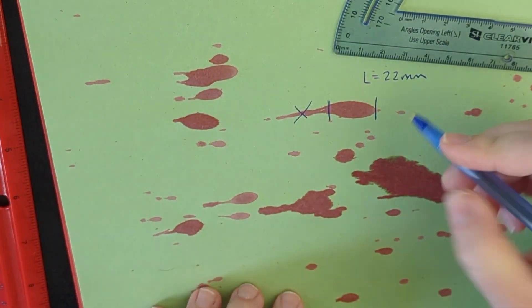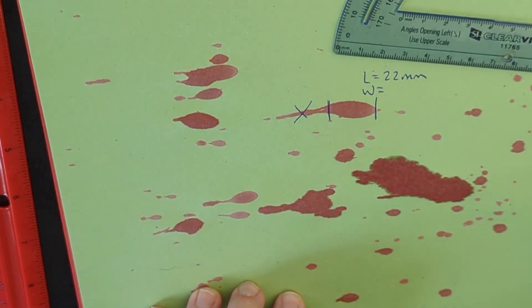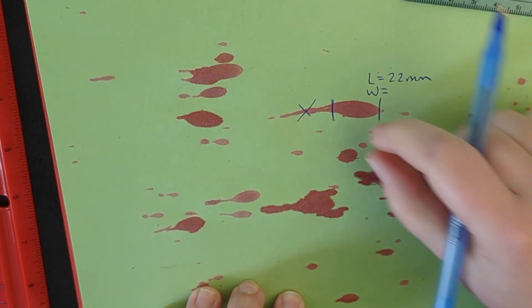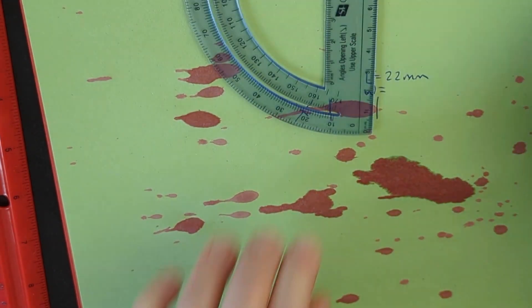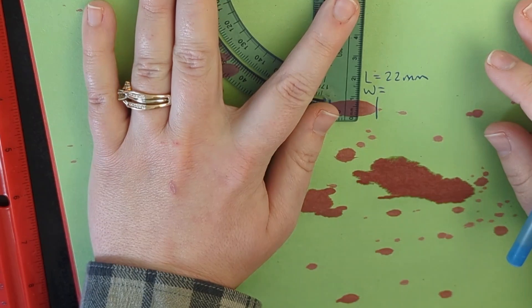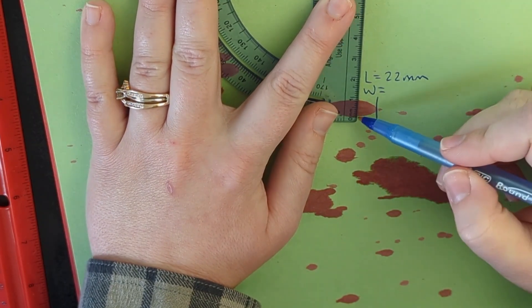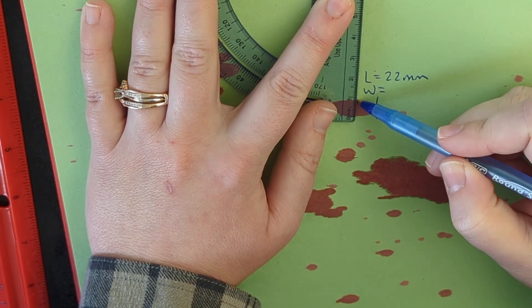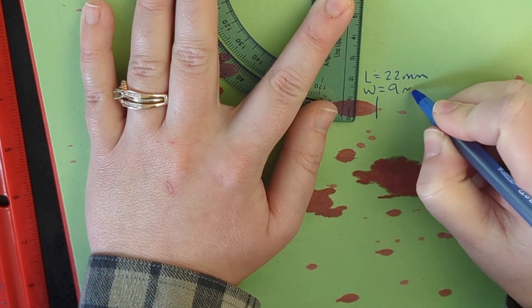Don't be afraid to mark up your page. We're going to write both length and width. I know that this is length because this is way longer than width but some blood drops it's really hard to tell. So again we're just going to measure straight through the middle. I've got about nine millimeters.